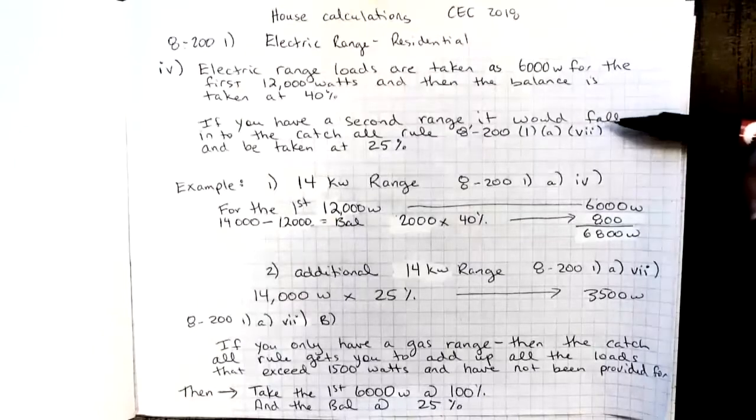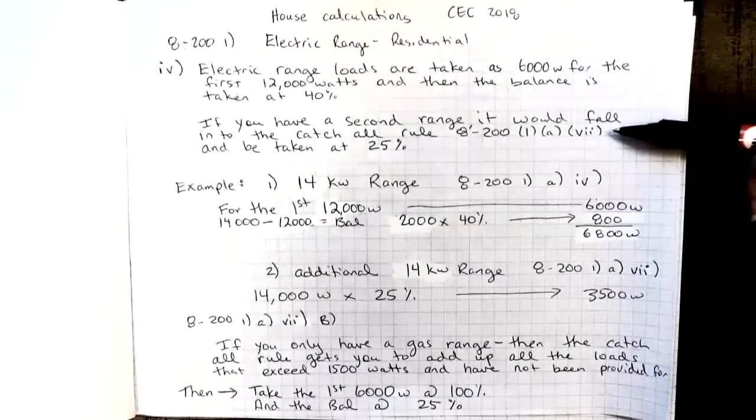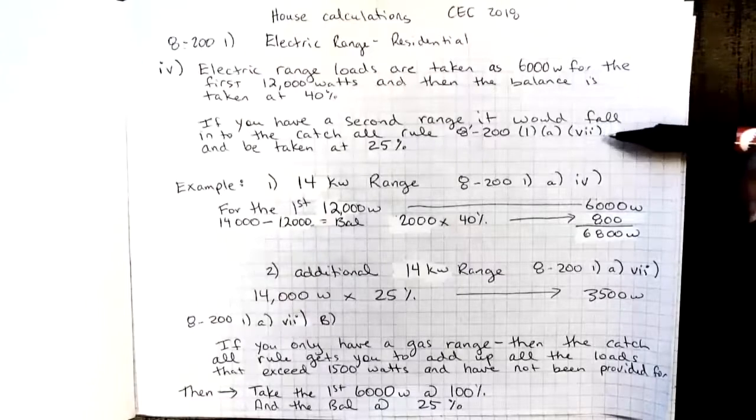If you have a second range, it would fall into the catch-all rule, which is 8201A7, and be taken at 25%.